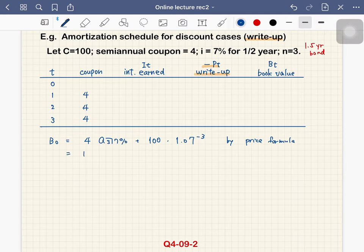So you can calculate this. This equals 10.497 plus 81.630, which becomes 92.13. So book value at time 0 is 92.13.